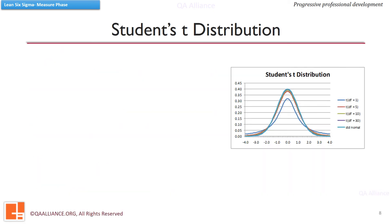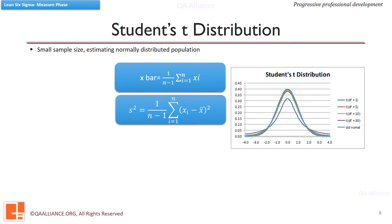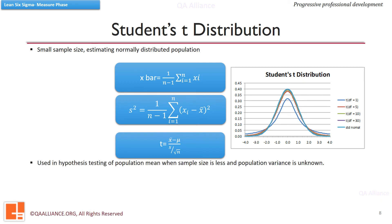One of the commonly applied distributions is the Student's t-distribution. This arises when we are estimating the mean of a normally distributed population when the sample size is small and the population standard deviation is unknown. Let X1 through Xn be observations from a continuously distributed population with expected value Mu. The sample mean X-bar and sample variance S-squared are given by the equation shown here, and the t-value can be calculated using the formula provided. T-distribution is used in hypothesis testing of population mean when sample size is small. When there are infinite degrees of freedom — or in practical terms, a large sample size — t-distribution equals the normal distribution.